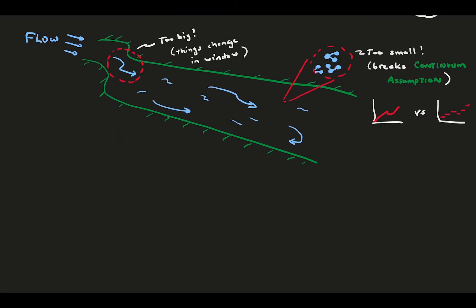We need the continuous assumption for many things, and one of those things is being able to apply calculus to our problem. So let's not break this assumption and make our window too small. So, in general, our fluid is observed through many small elements without breaking the continuous assumption, and we assume the size goes to zero so that we can apply calculus.